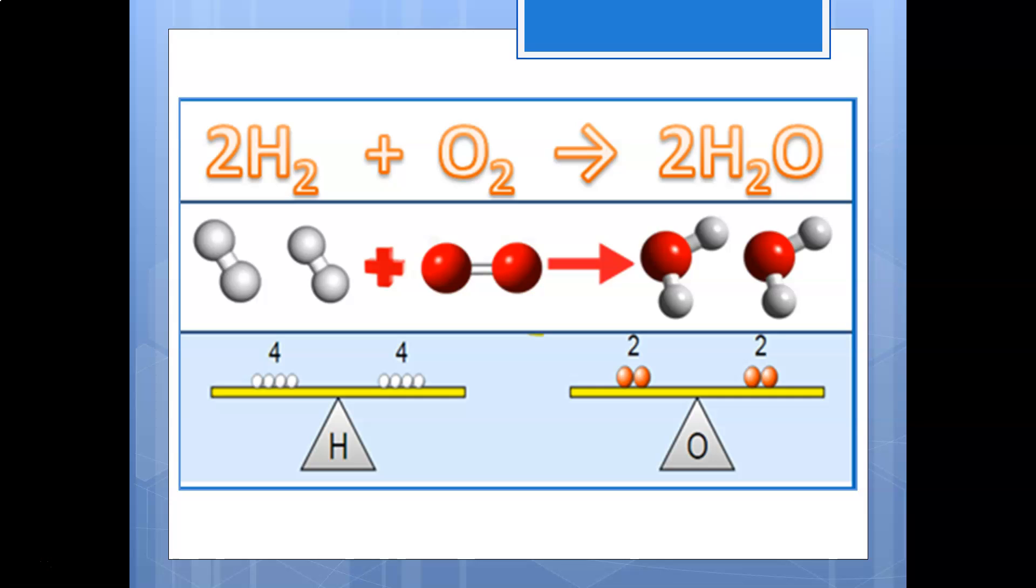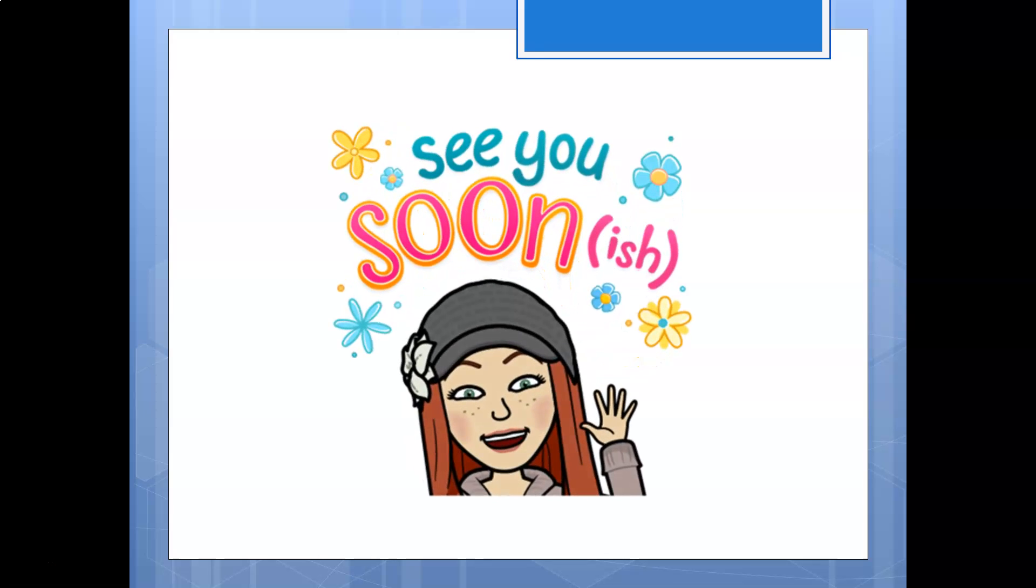Here we've got the formation of two water molecules. This is an interesting one that we'll look further into and this is actually just looking at how we balance equations. At the top we've got our symbol equation, our chemical equation there using our symbols. I will see you in the next video where we take this one step further to start looking at balancing equations.